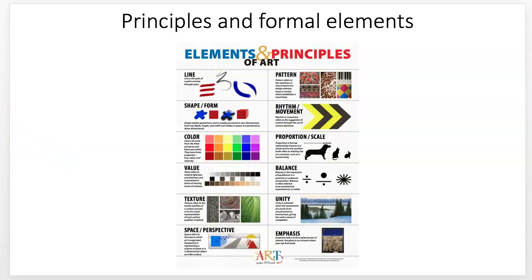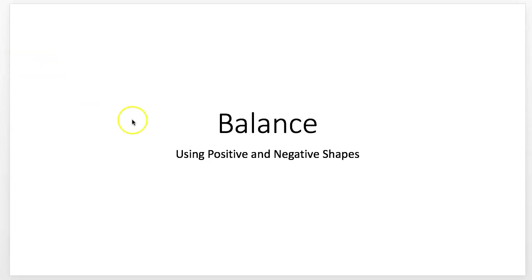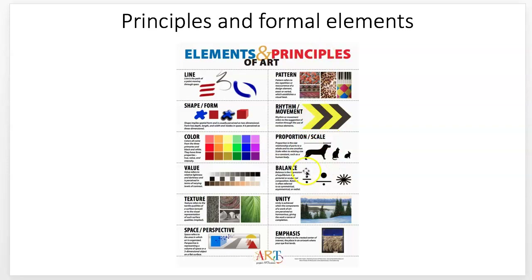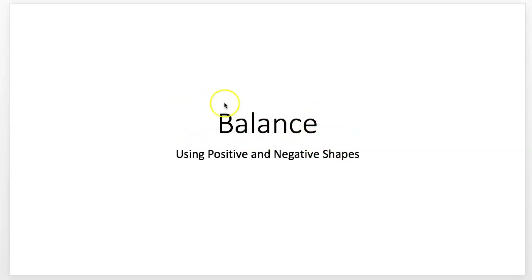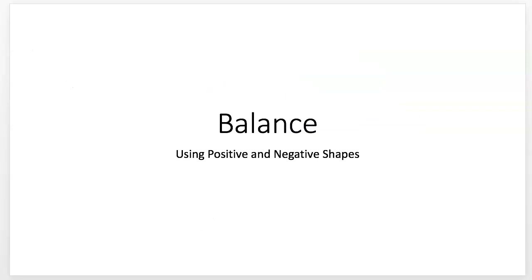This next project you're going to be working on uses balance, which is a principle, and the element of shape — positive and negative shapes — to show ideas about balance. So let's talk about what balance is. It is the equilibrium of opposing or interacting forces in a pictorial composition. I have this picture up because it shows you the feeling of being off balance, which brings across the idea that balance is a bodily, felt sensation.